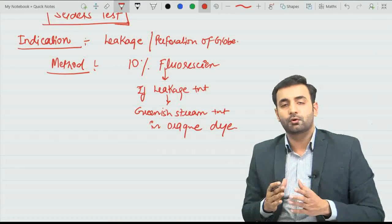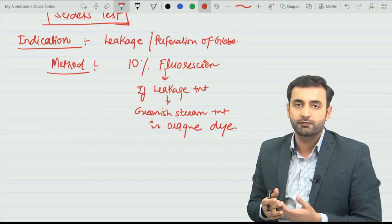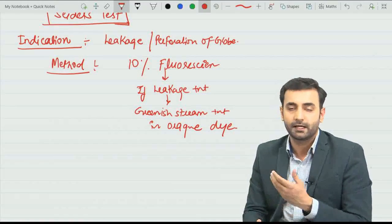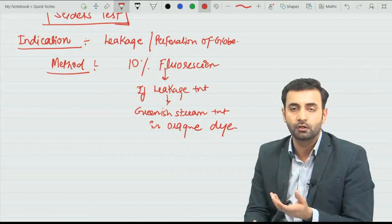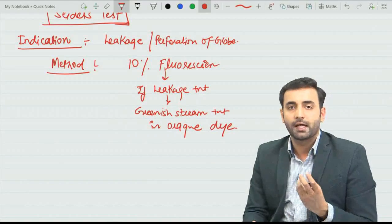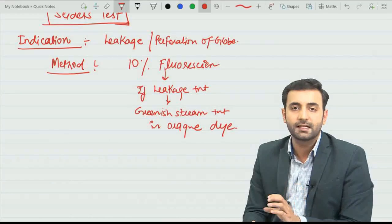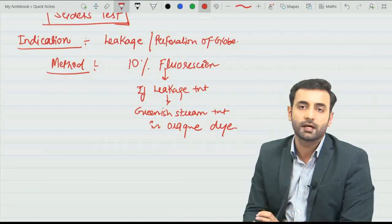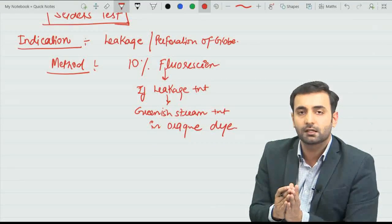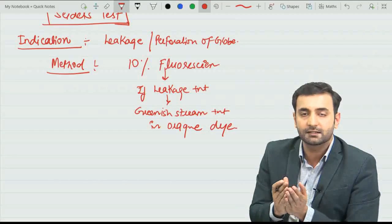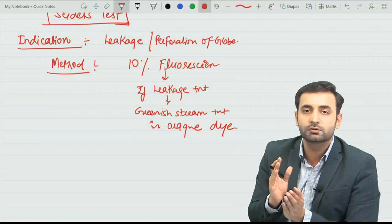Fluorescent dye is orange in color. When we apply the dye directly to the site of wound, if there is aqueous coming out, the aqueous will appear as a green stream in the orange dye. You will see the leakage as green in color on the blue filter.